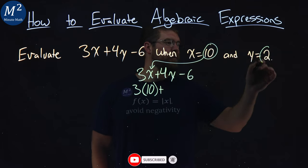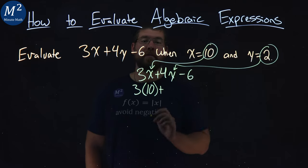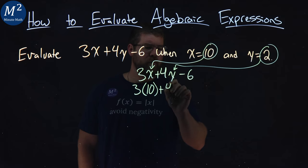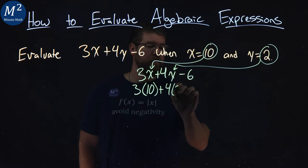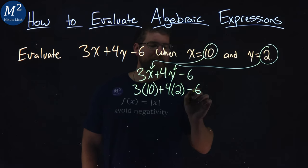And I'm going to do the same thing with this y value being 2. Put in for our y. 4 times, instead of y, I put a 2. Then we subtract a 6.